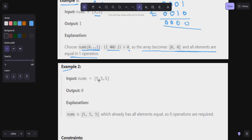In example 2, all the elements are the same. If all elements are the same, then no operation is required. Nums is [5, 5, 5] which already has all elements equal, so 0 operations are required.